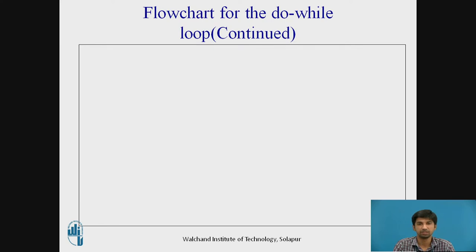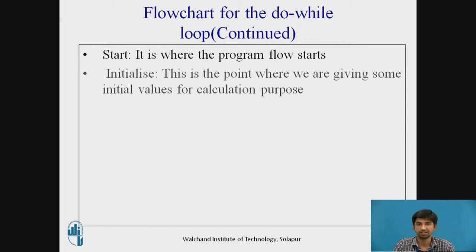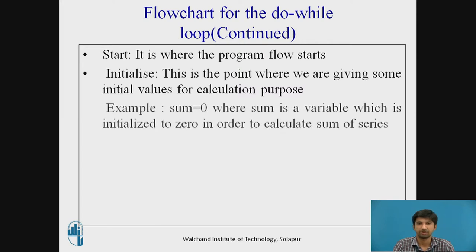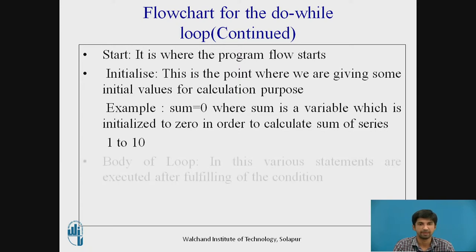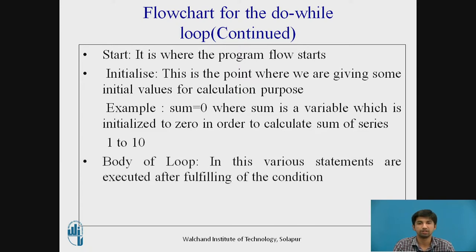Continuing the flowchart for the do-while loop: Start — from where the execution of the program begins. Initialize — this is where we give initial values for calculation, such as sum = 0, where sum is a variable initialized to 0 to calculate the sum of a series. For example, i = 1 and n = 10. Then the body of the loop, where various statements are executed. Then the test condition is checked using relational operators: greater than, less than, less than or equal to, and greater than or equal to.